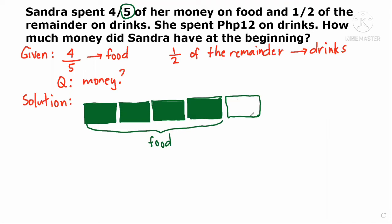This remaining one bar is what's left. Since only half of the remainder was spent on drinks, half of that remaining portion equals 12 pesos — because that half is for drinks, so that half is worth 12 pesos.